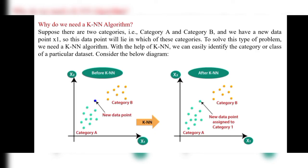To solve this type of problem we need a KNN algorithm. Consider the diagram: before KNN, a new data point is in the middle with no clear category. After applying KNN, it is seen that the point belongs to Category A — its color turns from blue to green. KNN checks the similarity and determines whether the point belongs to Category A or Category B, then separates it accordingly.